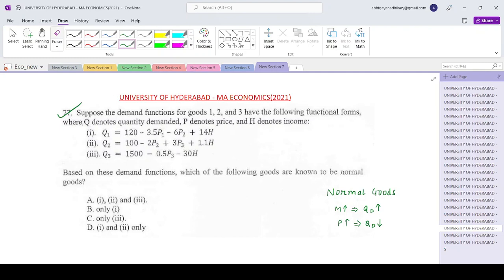So if you look at this, if you evaluate number 3, this doesn't fall. Because the coefficient of income is negative. That means if income rises, demand for Q will fall. So definitely this is not a normal good. So 3 is out.